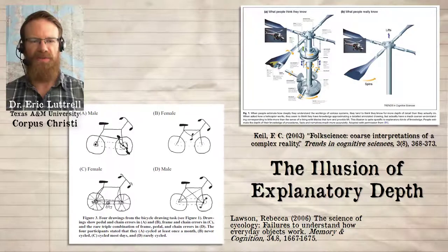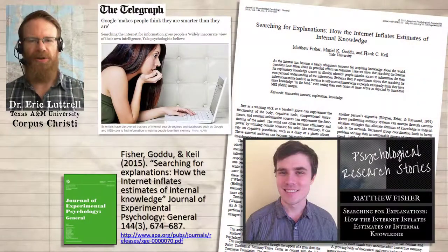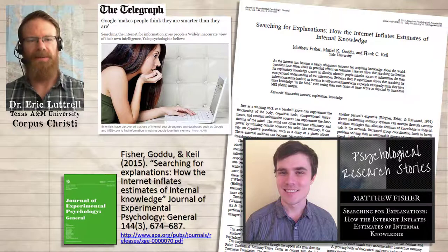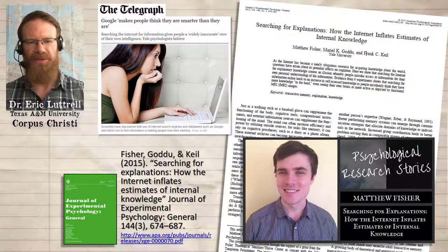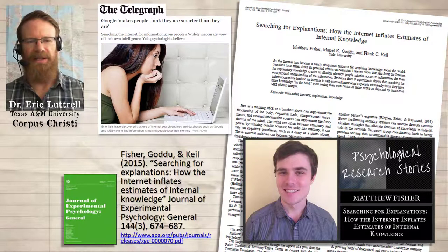When we see a familiar object, we can mistake that feeling of familiarity with actual understanding. This confusion is called the illusion of explanatory depth, and nothing feeds our illusion of explanatory depth like the internet. The internet is an infinite source for one-sided, incomplete, and wholly inaccurate descriptions, ready-made for easily fitting new things into old frames.